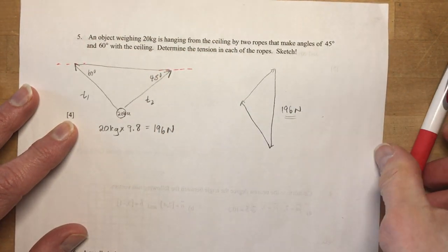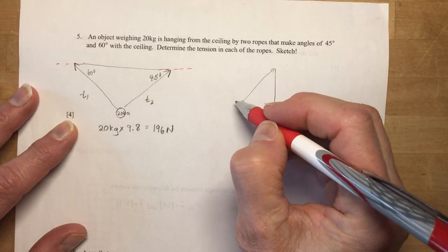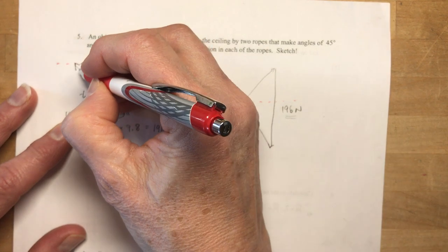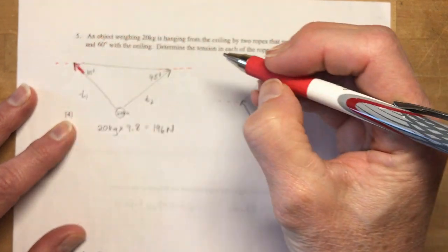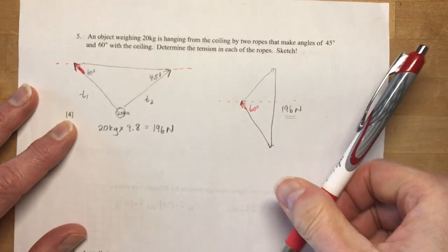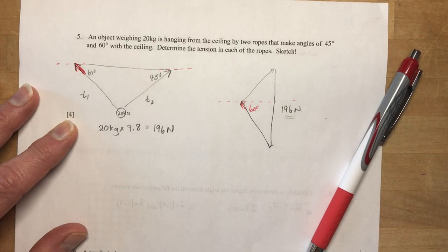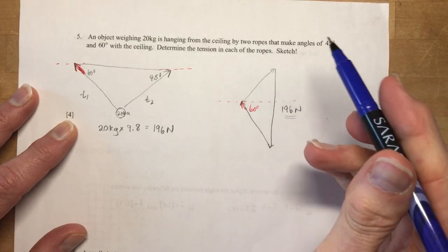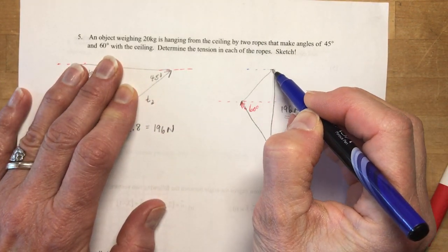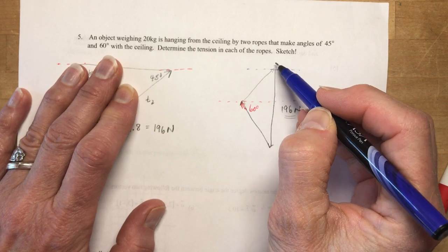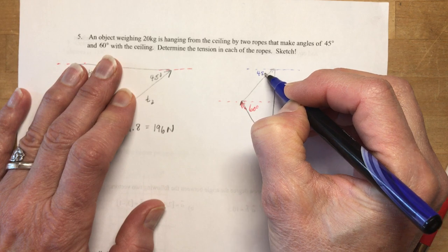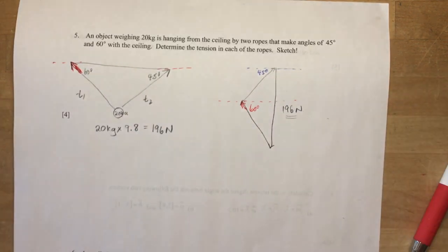So I want something with 196 newtons going down and then two newton, two vectors that add up to 196. And that's this tension and this one. So put arrows on those. And then it's always a good idea to kind of think about this is the ceiling so you can find your angles. So no ceiling down here. But there was a ceiling here. And this vector here, I'll put a little red arrow on it, is the same as this one here. So this is going to be 60 degrees in here.